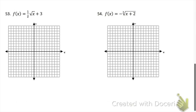Problems 53 and 54 are just like the previous two problems. Make sure you're double-checking your transformations — problem 53's graph should be compressed and should have gone up 3 from the parent function. In problem 54, you should have a reflection and should have gone left 2 from the parent function.